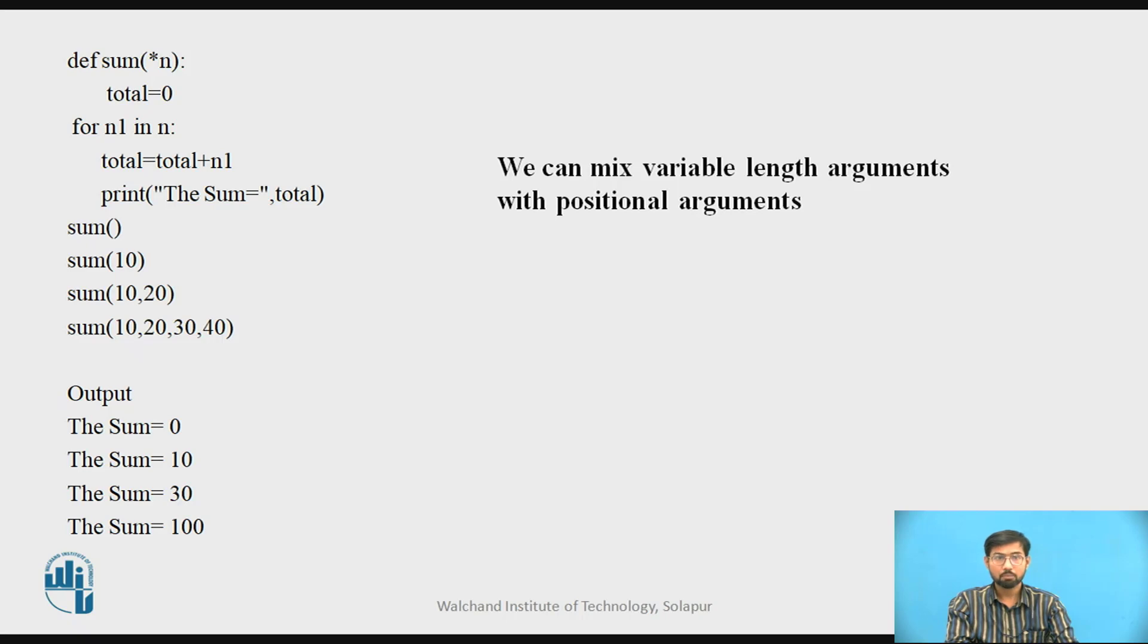Sum function is star n. We can define any number of inputs in sum function: 10, 10, 20. If you observe, first it will take 0, then it will observe the loop and print sum equals 10, then sum equals 10 plus 20 equals 30, then sum equals 10 plus 20 plus 30 plus 40. We can mix variable length arguments with positional arguments.